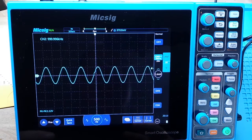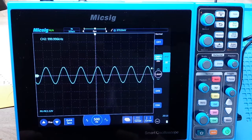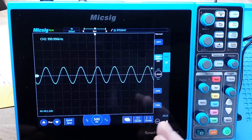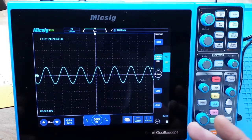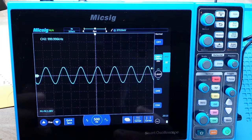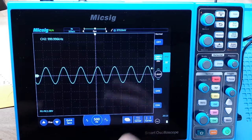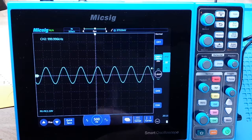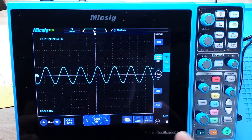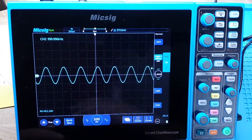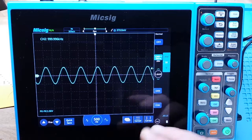The next modes we have are peak, high res, average, and equivalent time. Now there are others when you get into higher end oscilloscopes and then you have your video modes, your serial decoding modes, but we're just talking about these straight ones. This is normal and there are really no caveats to using normal. For your basic day-to-day oscilloscope use, stick with normal.